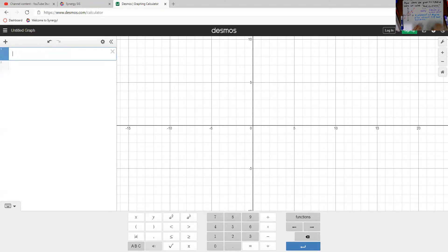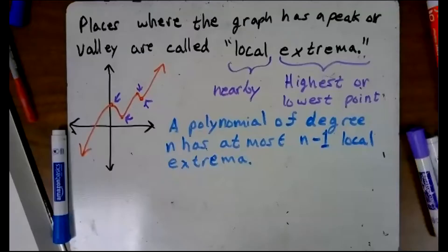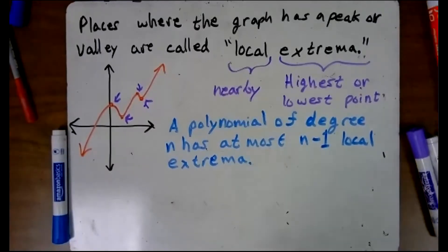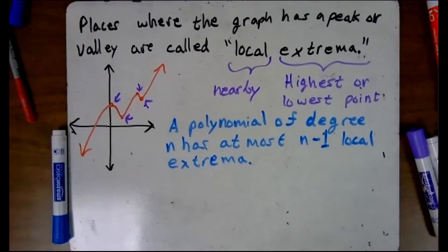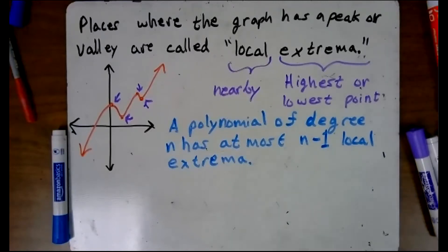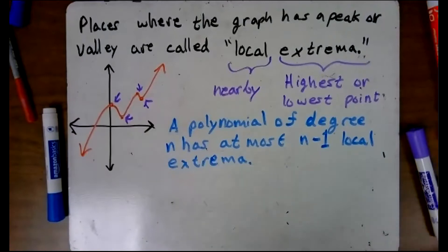Local extrema are actually really important for real life applications, though you probably won't see too many of those applications until calculus. For example, if I have a graph of profits depending on how much money I invest — if I invest too much money I'll never make it back, and if I don't invest enough it doesn't get off the ground — then the local extremum is where I get the most profit.